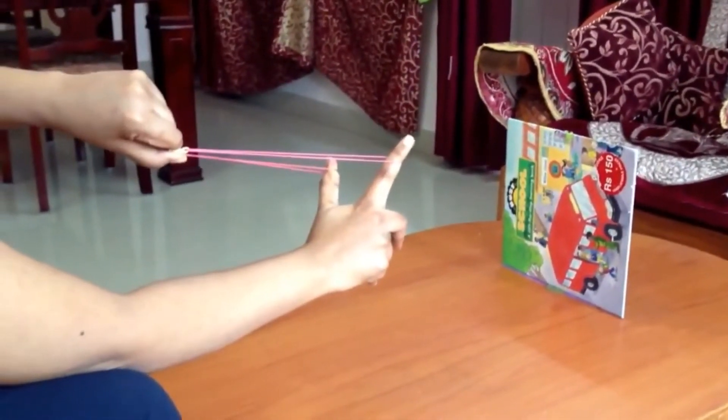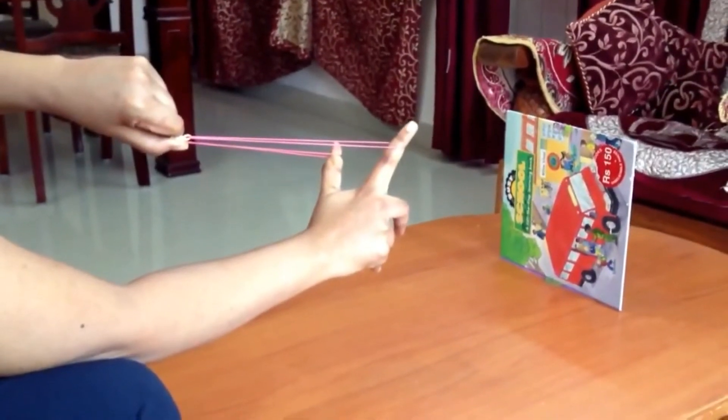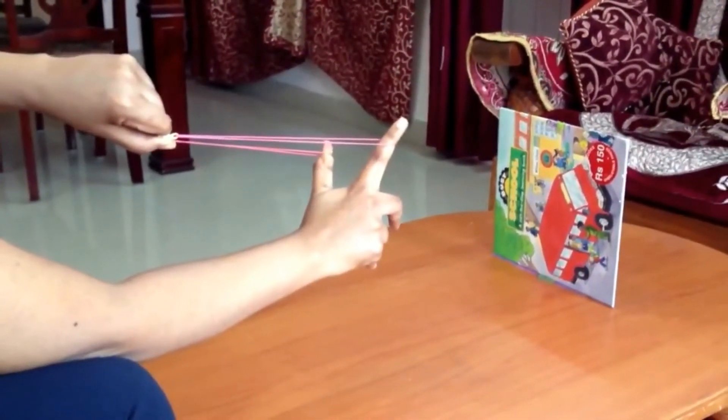When we release the rubber band, it loses its potential energy and converts its energy into kinetic energy which sets the paper arrow in motion.